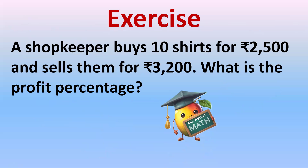This exercise is for you to solve. A shopkeeper buys 100 shirts for 2,500 rupees and sells them for 3,200 rupees — what is the profit percentage? The cost price is 2,500 and selling price is 3,200, both given for the same quantity, so no multiplication is needed. Find the profit by taking the difference, then find the profit percentage. Write your answer in the comment section.